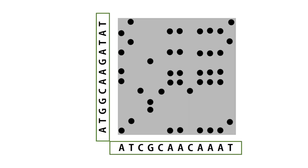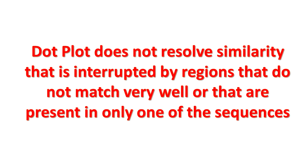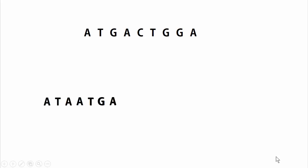In our video on dot matrix plot, the link of which is provided in the video description, we showed that dot plot can be used to detect sequence similarity. But dot plot has a serious limitation — it does not resolve similarity that is interrupted by regions that do not match very well or that are present in only one of the sequences. Therefore, we need to devise a method that considers these limitations and still provides an optimal alignment between two sequences.